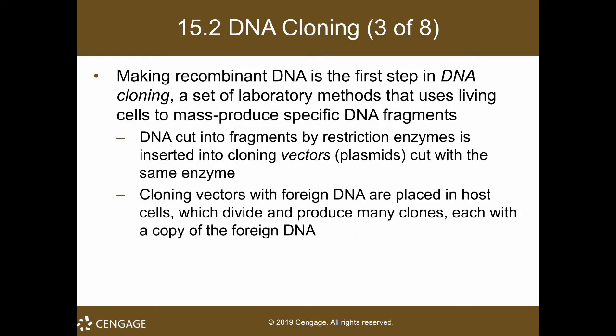DNA cloning is the set of laboratory methods that uses living cells to mass-produce specific DNA fragments. You cut the DNA into fragments with your restriction enzymes, then insert them into vectors — these can be cloning or expression vectors. Cloning vectors, as the name suggests, mainly create copies. The cut DNA is inserted into vectors that were cut with the same enzyme. The cloning vectors with the foreign DNA are placed in host cells, and when they divide, they produce clones — each clone should have a copy of the foreign DNA.